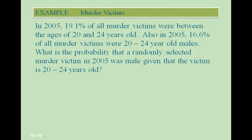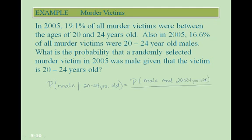Let's look at another example. In 2005, 19.1% of all murder victims were between the ages of 20 and 24 years old. Also in 2005, 16.6% of all murder victims were 20 to 24 year old males. What is the probability that a randomly selected murder victim in 2005 was male given that the victim is 20 to 24 years old? This equals the probability that they're male and 20 to 24 years old divided by the probability that they are 20 to 24 years old.